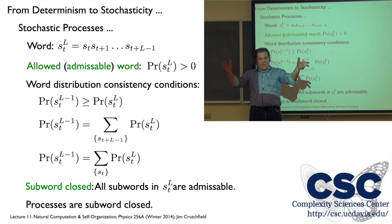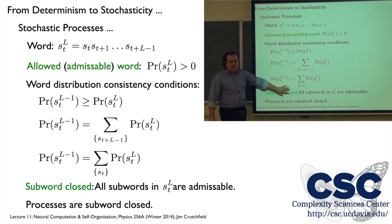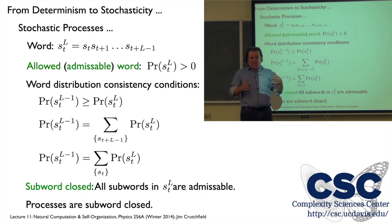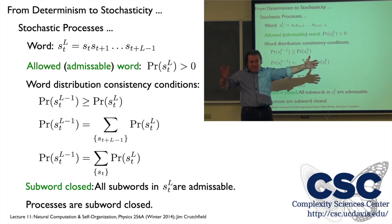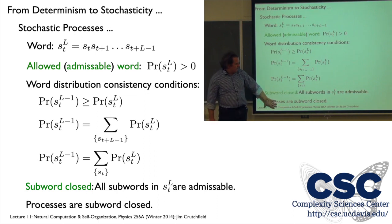The reason we emphasize sub-word closure is that in computer science there's a different notion of allowed words — in formal language theory you can have a word like one-zero-one that's accepted while one-zero is not. This is more of a physics setup: if I've seen a sequence, I necessarily saw all the measurements up to that sequence. So our processes are sub-word closed, and the probability distributions have these consistency conditions on them.